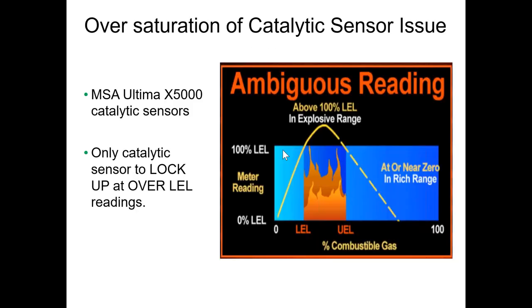One feature of a catalytic bead sensor is susceptibility to oversaturation. If the active bead is exposed to an environment over 100% LEL, the reading becomes ambiguous and inaccurate. At least one manufacturer has a setting where if the sensor is exposed to over 100% LEL, it will actually lock up — alerting the user that the sensor reading can no longer be trusted in that environment.